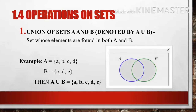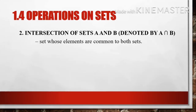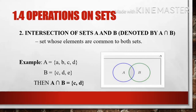Just like in this Venn diagram, we take the elements in set A and set B, including similar elements. Next is the intersection of sets A and B, denoted by A ∩ B — defined as a set whose elements are common to both sets. For set A = {A, B, C, D} and set B = {C, D, E}, the common elements are C and D, so A ∩ B = {C, D}, as shown in the Venn diagram.